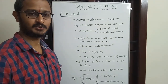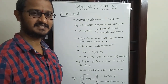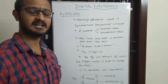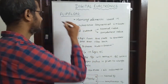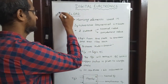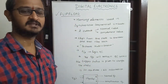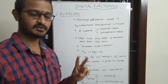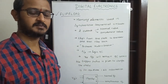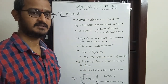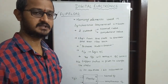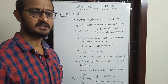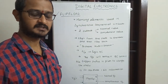Hi friends, so in our journey of digital electronics, this is the last topic. The last topic depends on what we have covered in previous videos. We have two types of circuits: one is combinational and one is sequential. The combinational circuit depends upon the present input.